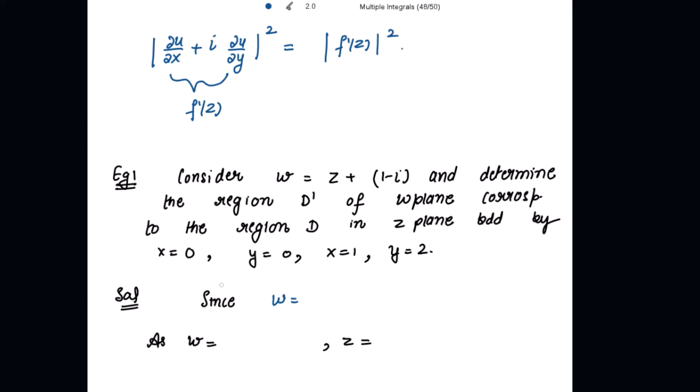Let's move on to an example. Given w = z + 1 − i, determine the region D' in the w-plane corresponding to region D in the z-plane bounded by x = 0, y = 0, x = 1, and y = 2. These are the boundary equations for region D. We must find region D' using the transformation w = z + 1 − i.